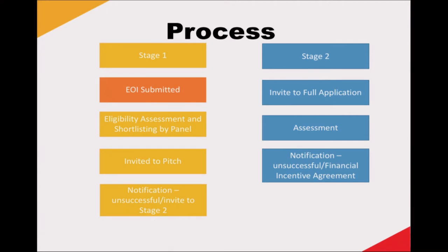The process for the program involves two stages. Stage 1 is the expression of interest, and then shortlisted applicants progress to a full application at Stage 2. The more complete and comprehensive the EOI and application is, the faster the process will be. All applicants that submit an EOI will go through an eligibility assessment and the first batch of assessments will commence by mid-March. Eligible applicants will progress to an assessment panel which will include members with industry knowledge and access to specialist expertise if required. The panel will assess against criteria and then invite shortlisted applicants to pitch their project.